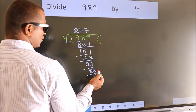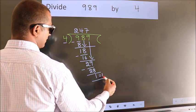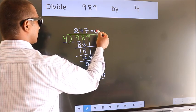No more numbers to bring down. So we stop here. This is our remainder. This is our quotient. That's our answer.